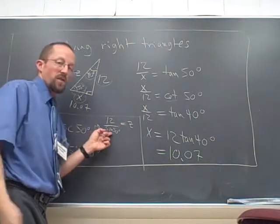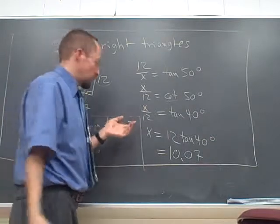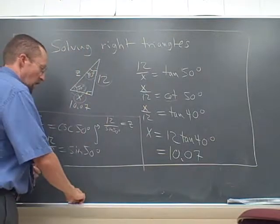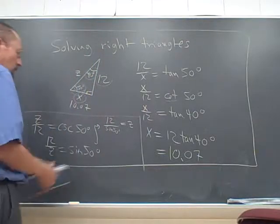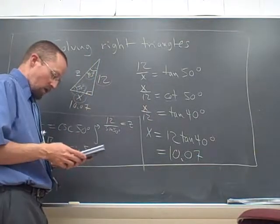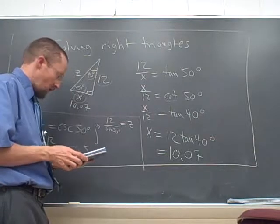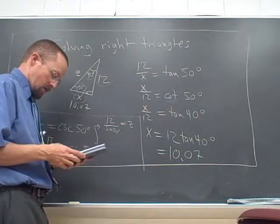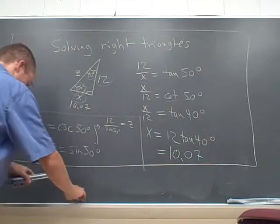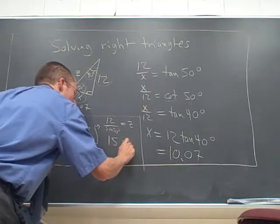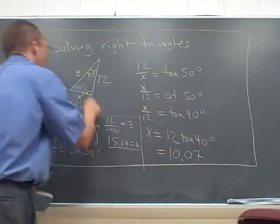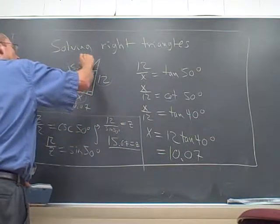I've got a sine in the denominator, so secretly I really am taking a cosecant. So it would have worked here as well. But one way or another, with the calculator not having a cosecant button, we're going to have to take one over sine. So 12 divided by sine 50, 15.67.